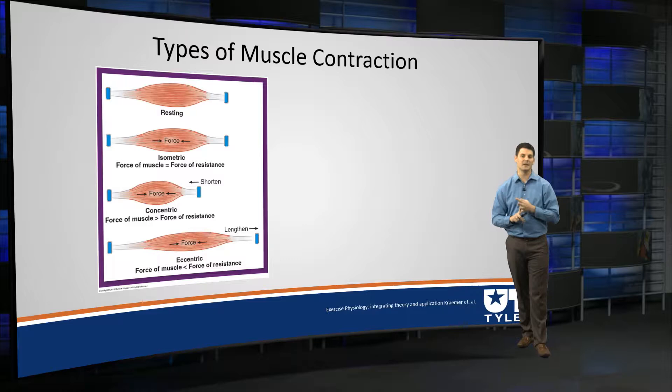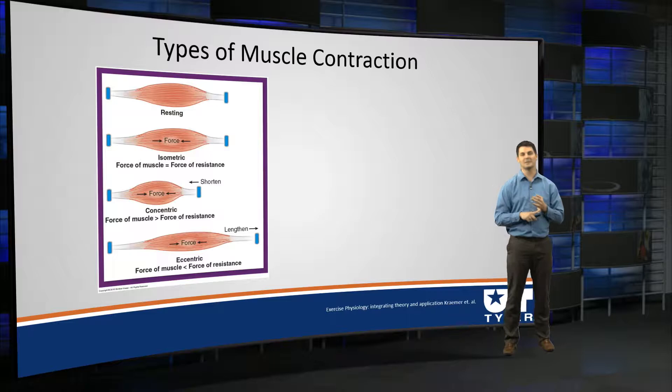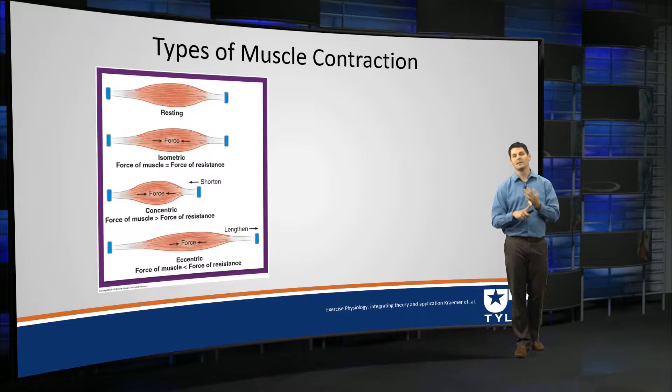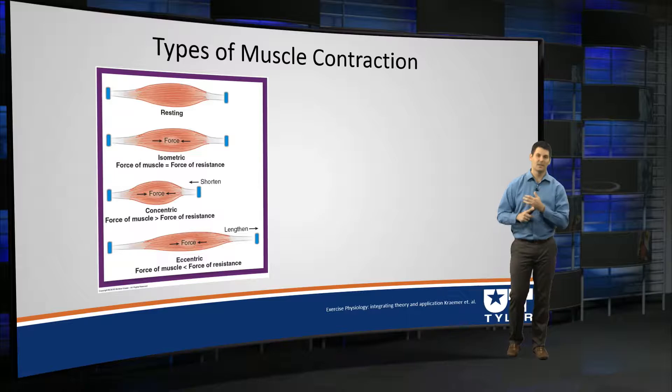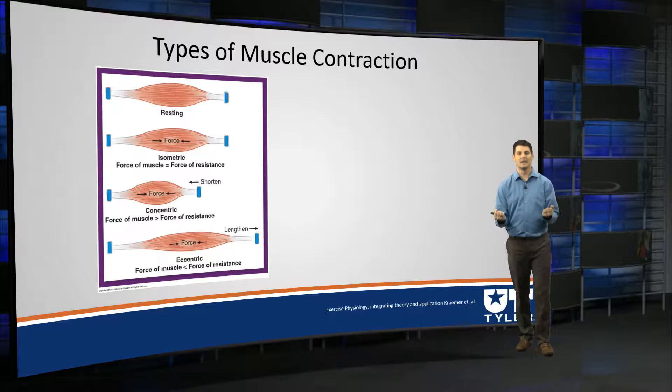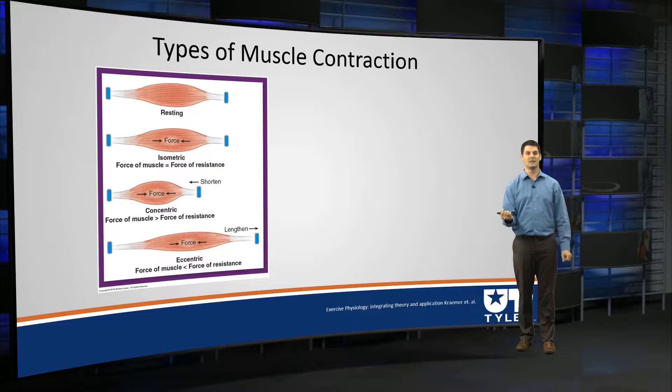An isometric contraction is essentially described as a contraction in which there's no change in the length of the muscle. This means that the force that the muscle produced is exactly the same as the force or resistance that it's trying to work against. An example is holding a 10-pound barbell and being able to hold it by generating 10 pounds of force.